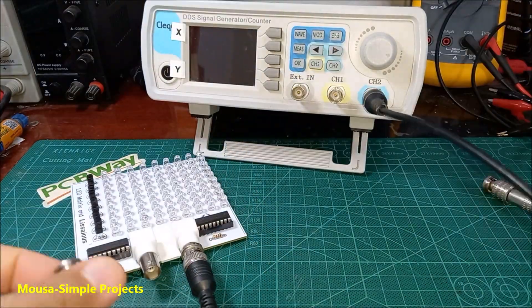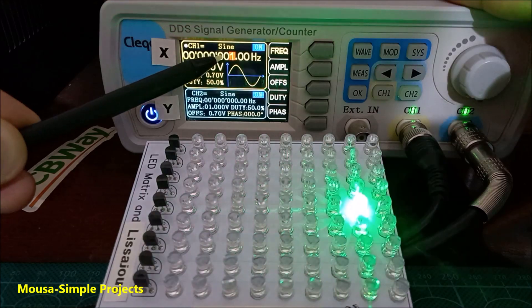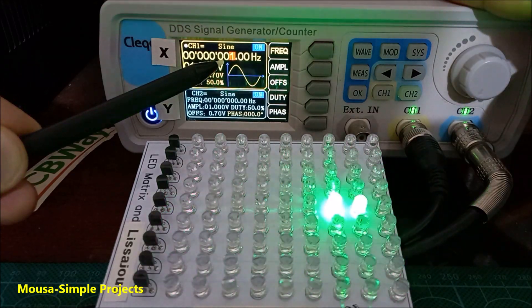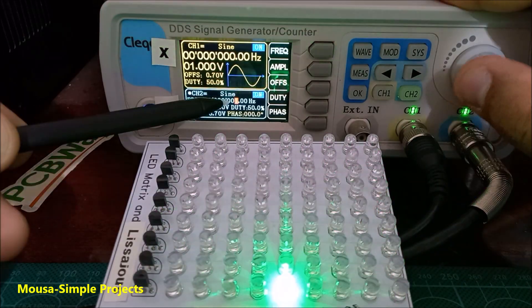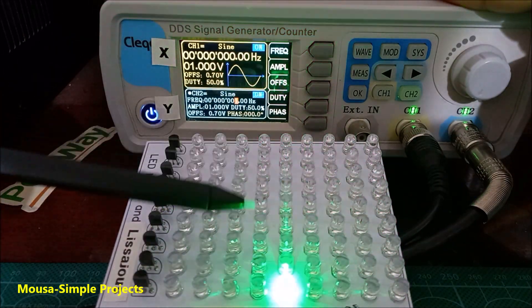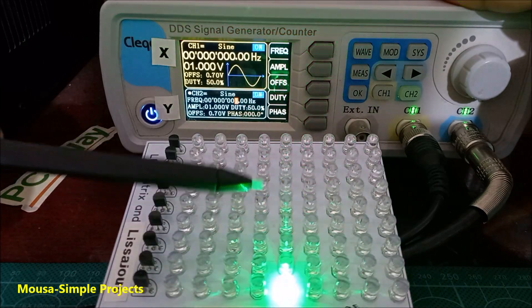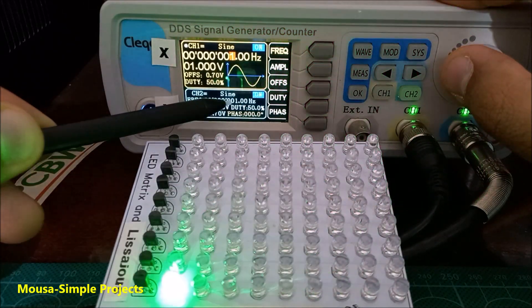Connect the x-axis and y-axis to the function generator. I set the x-axis to a very low frequency, and as you can see, the LED is moving back and forth. The same thing for the y-axis. This time the LED is moving up and down. And now both axes at the same time.